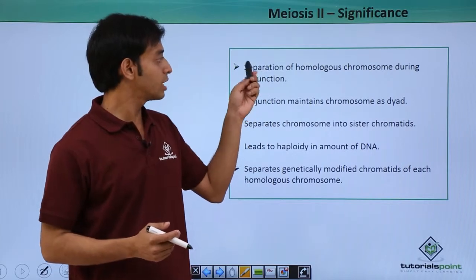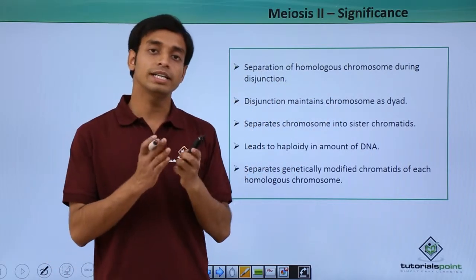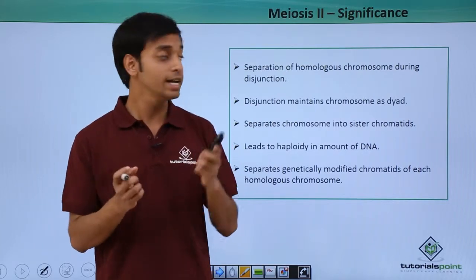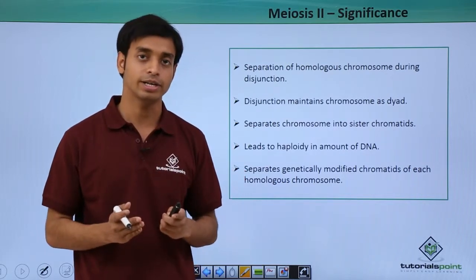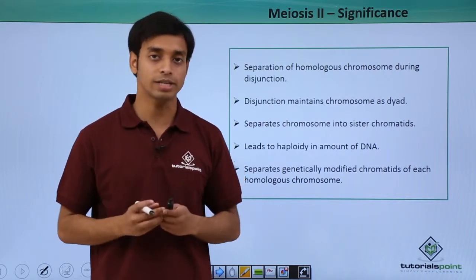Meiosis II shows the separation of homologous chromosomes during disjunction. Initially, in total meiosis, the homologous chromosomes have separated. Now in Meiosis II, the sister chromatids of the homologous chromosomes also get separated. Because of this, we get a haploid number of chromosomes in the new daughter cells.